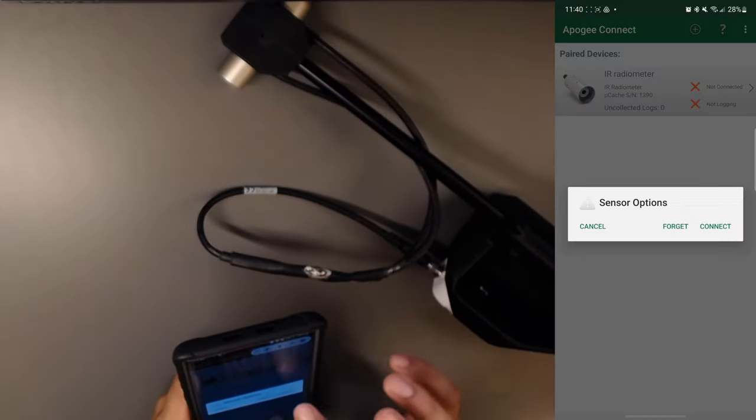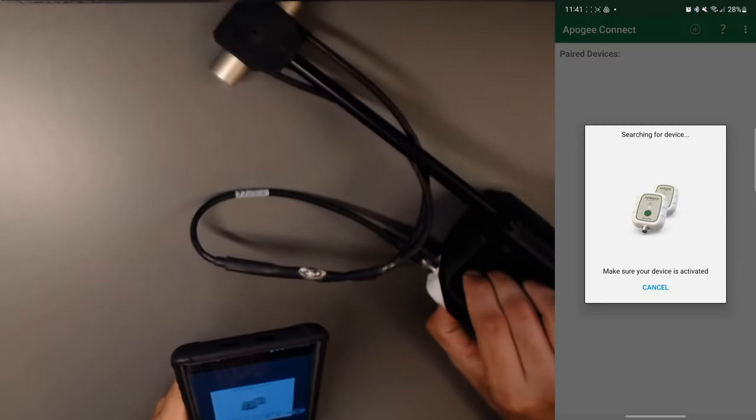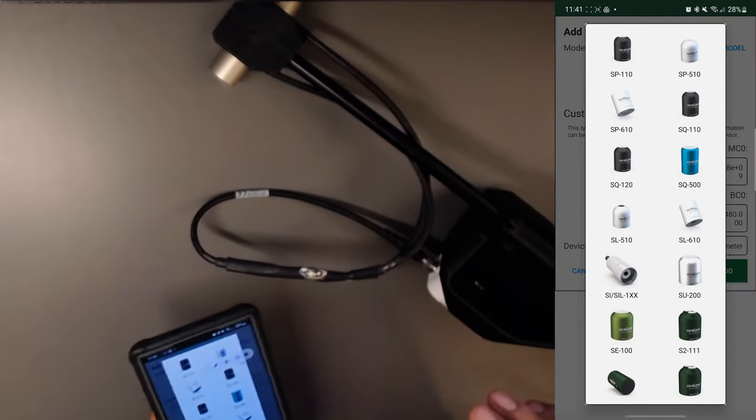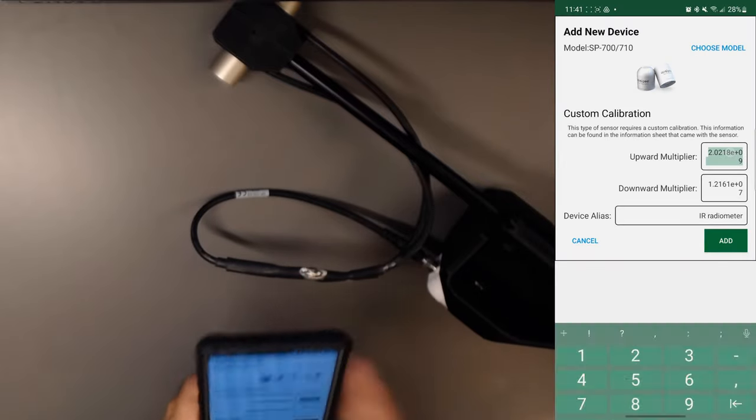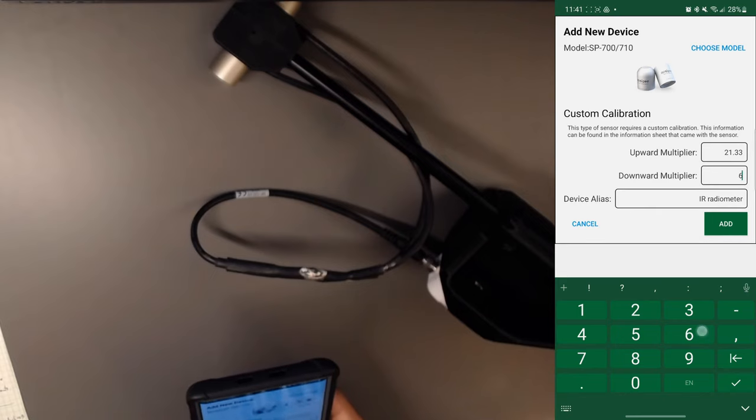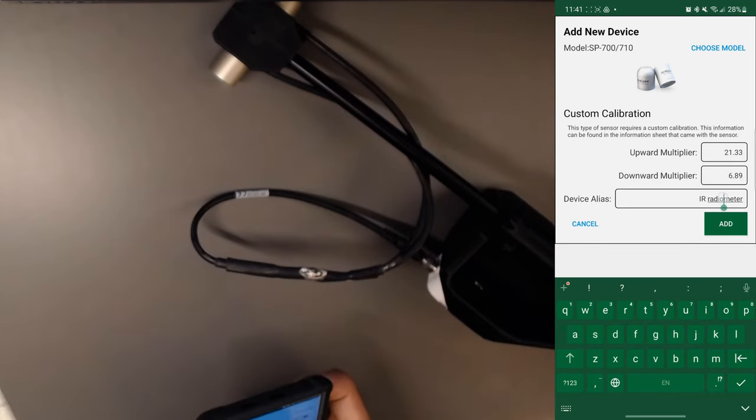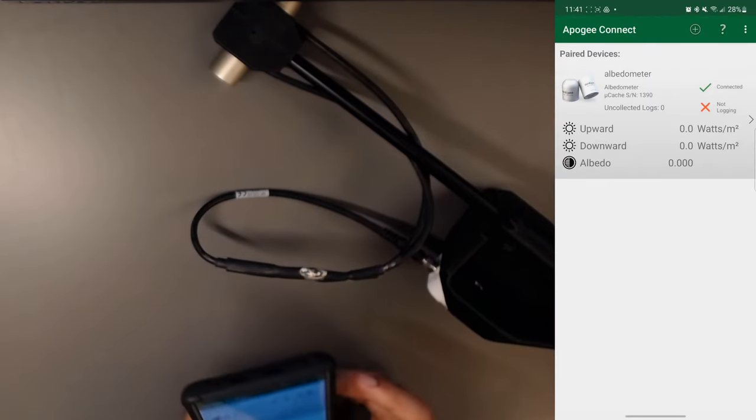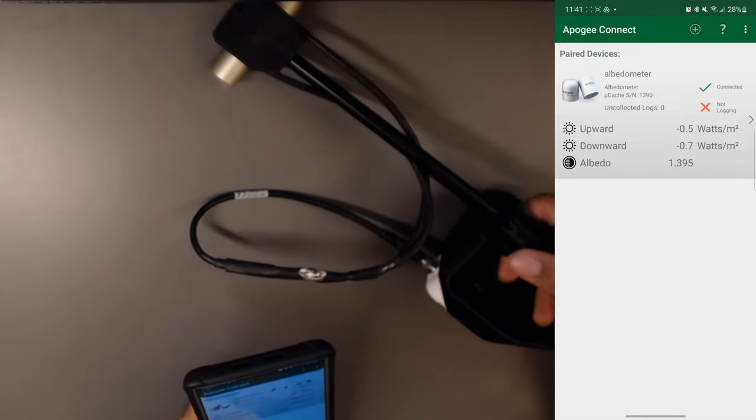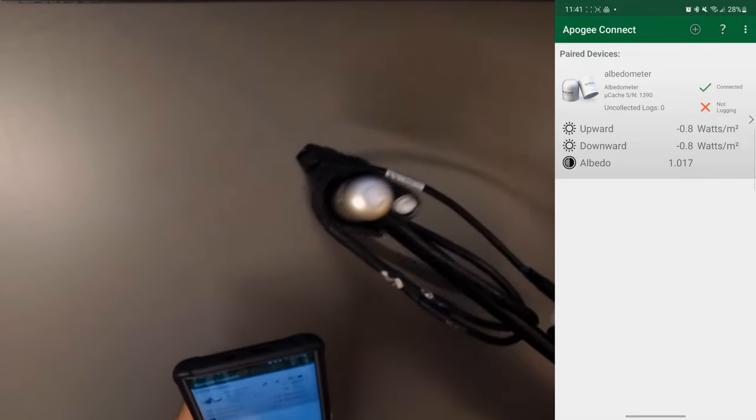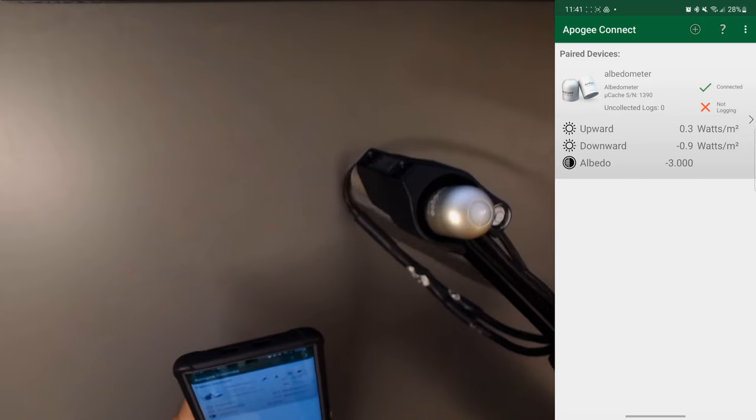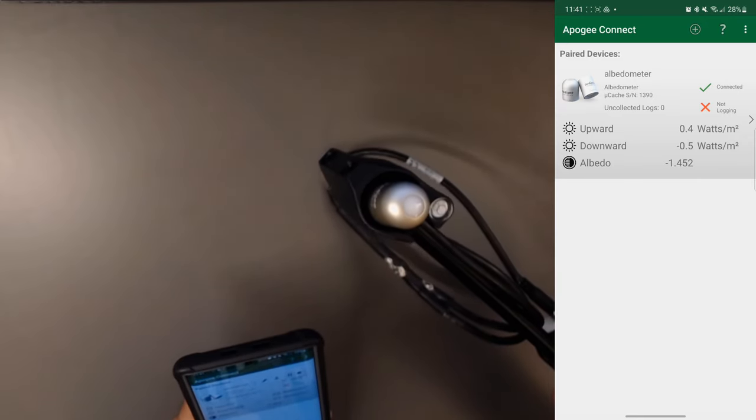Like before, we have to pair it to our phone via the Apogee Connect app. We also have to enter in the calibration constants from the spreadsheet. We can see in the app that there are two values of measured light intensity. Indoors, the values are quite noisy since the sensors are made for outdoor use where the light intensity is much higher.